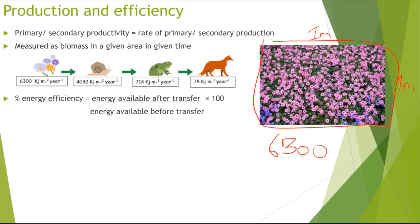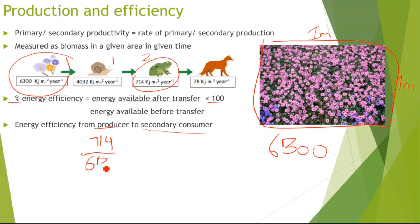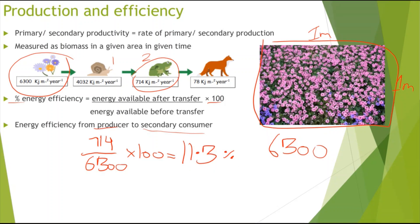Percentage energy efficiency is calculated as: (energy available after transfer ÷ energy available before transfer) × 100. For example, if asked to calculate energy efficiency from producer to secondary consumer — noting the secondary consumer is the third trophic level — if the energy available at the secondary consumer level is 714 kJ and before the transfer it is higher, dividing and multiplying by 100 gives 11.3% energy transfer efficiency.